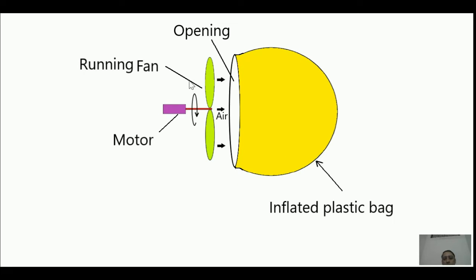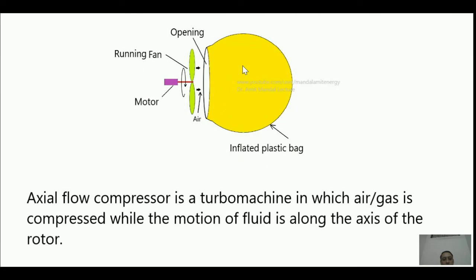The air is coming and, by the help of this fan, it is moving along the axis of rotation — this red-colored shaft is the axis. So air is actually moving in the direction of the axis of rotation. Initially the air had kinetic energy, and ultimately that kinetic energy is converting into pressure energy as it enters the plastic bag. This is the principle of an axial flow compressor: it is a turbo machine in which air or gas is compressed while the motion of fluid is along the axis of rotation.